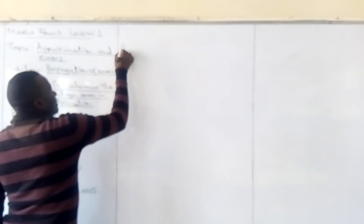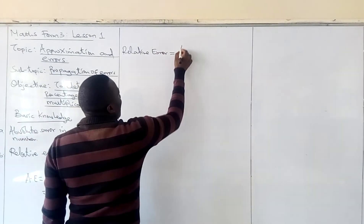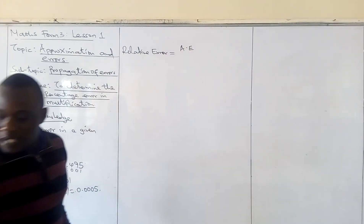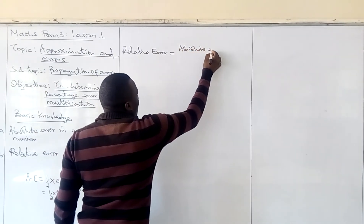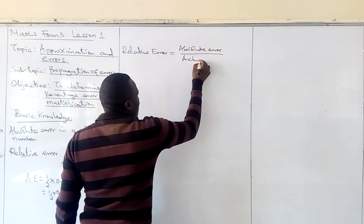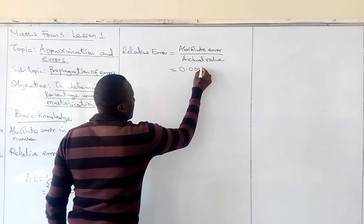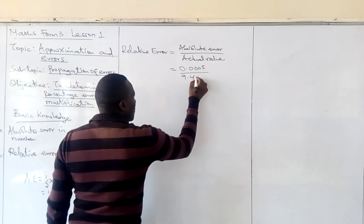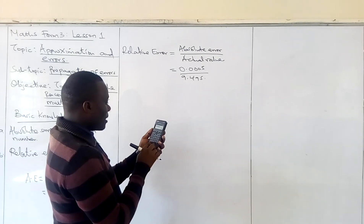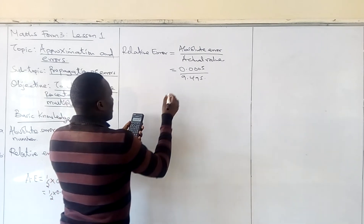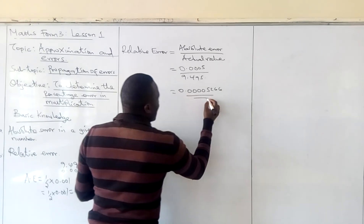Now that we have the absolute error, we can find the relative error. Relative error is equal to absolute error divided by the actual number. In this case, our absolute error is 0.0005, and we divide by the actual value 9.495, giving us 0.0005266. That becomes our relative error.